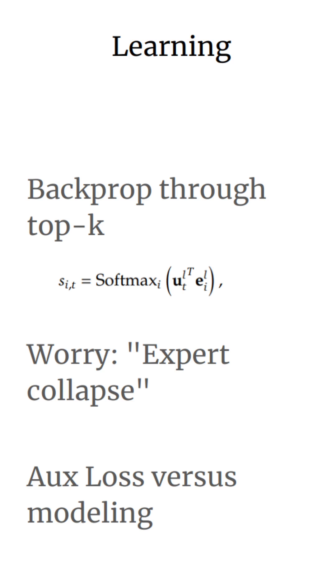The bigger issue is that when learning these, we may have expert collapse. The popular experts might get used more, and the less popular experts may be ignored. There are several ways to get around this problem, either by using an auxiliary loss, or by building directly into the model biases that can select the experts to utilize.